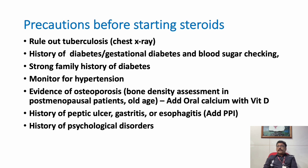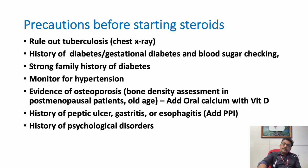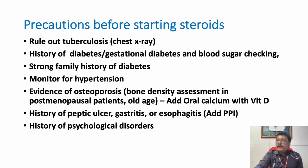Osteoporosis can increase with steroids, so we have to give vitamin D, calcium, or bisphosphonates like alendronate. GI ulcers are also a very important contraindication because steroids can induce gastritis, esophagitis, and other problems. Deflazacort is one type of steroid that is safer in terms of gastric side effects compared to other steroids. Very rarely, steroid psychosis can occur — after starting steroids, some patients can develop acute delirium and may not get sleep.